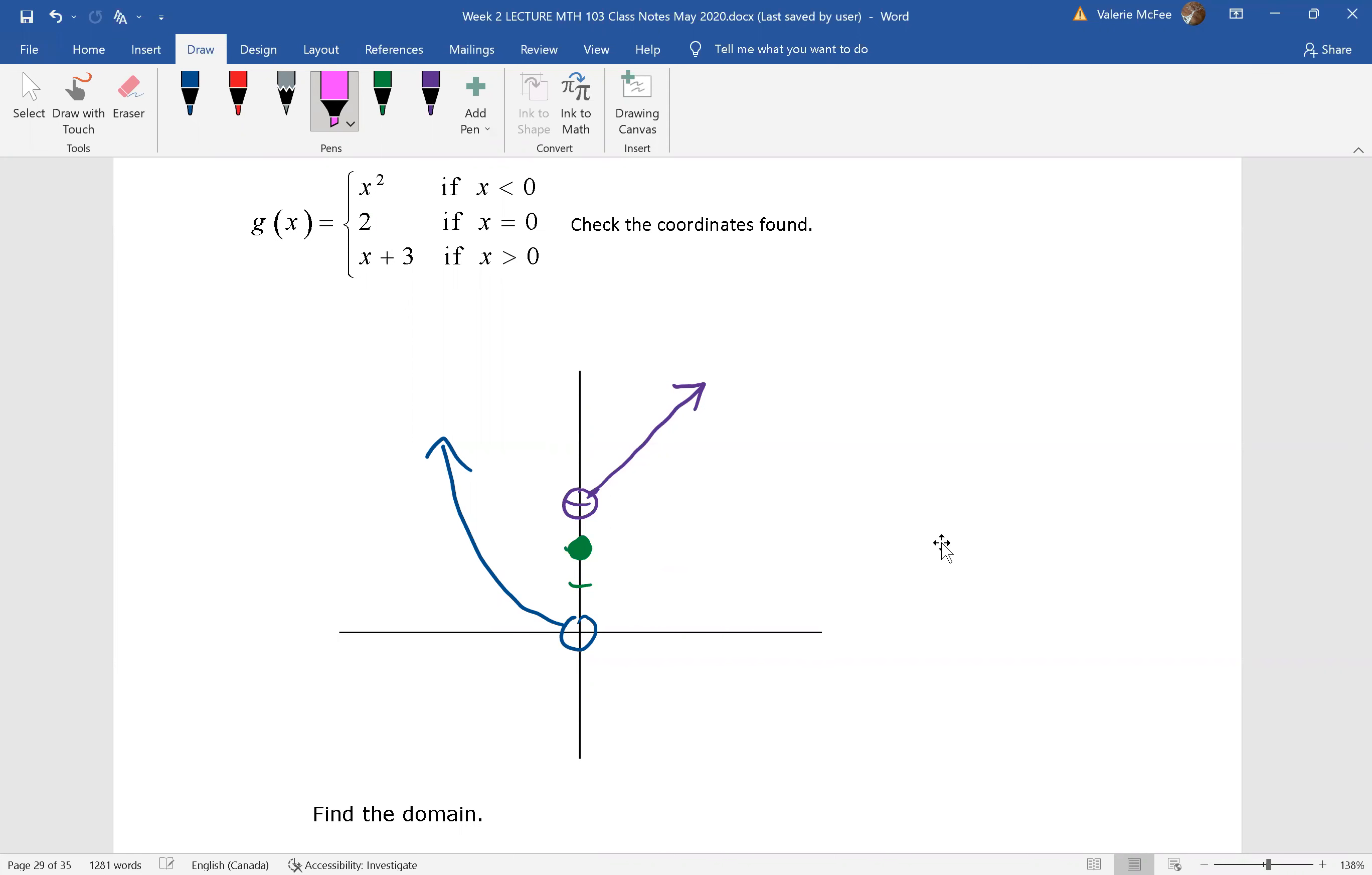So what about the domain of this function? Well, I hope you can see that it's from negative infinity to positive infinity. There are no gaps in the domain. The arrow on the left is going up, but it's also going to the left. The arrow on the right is going up and to the right.